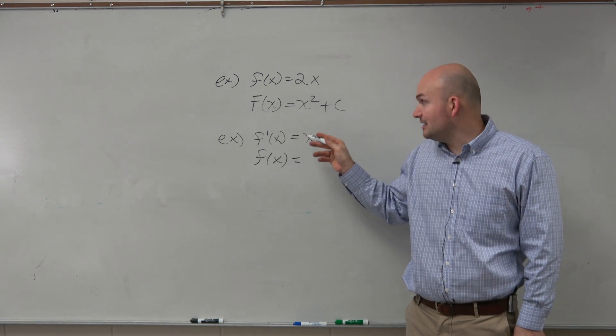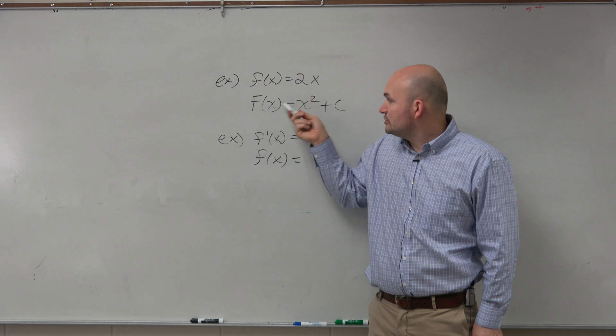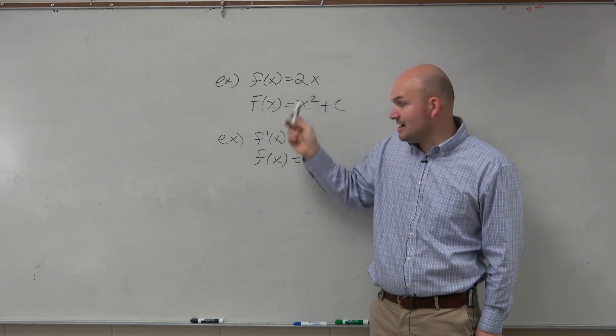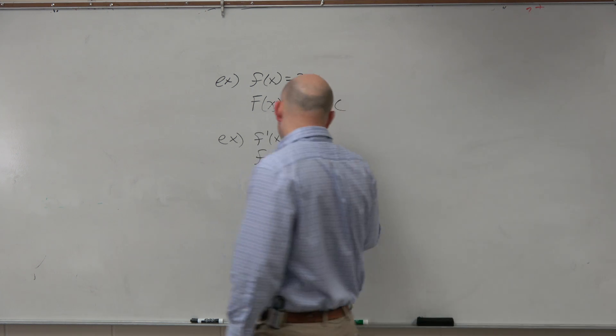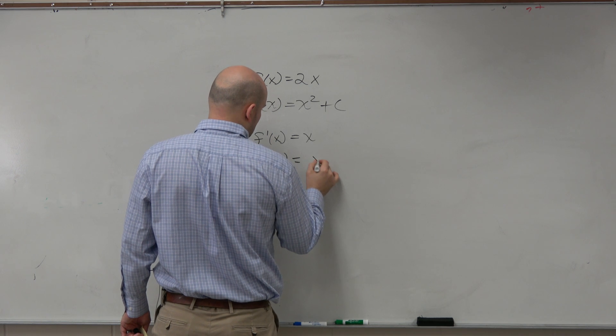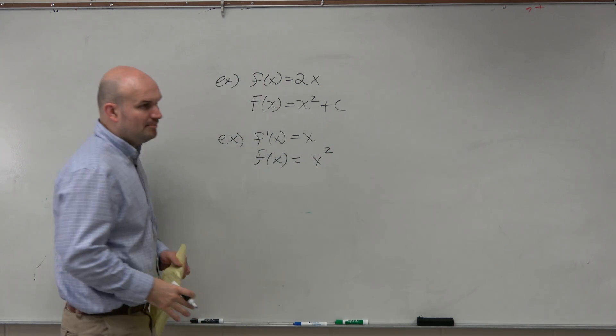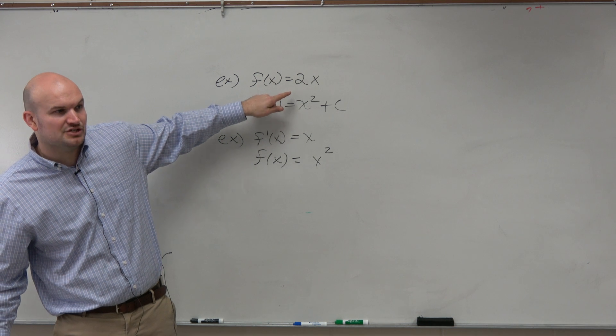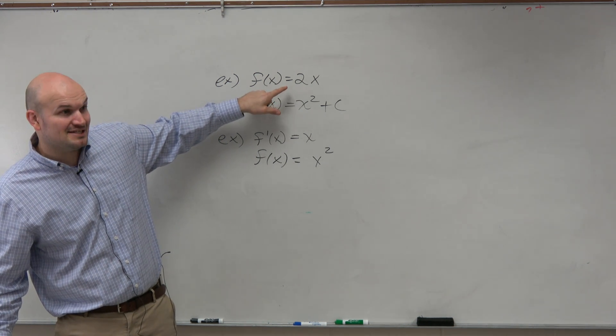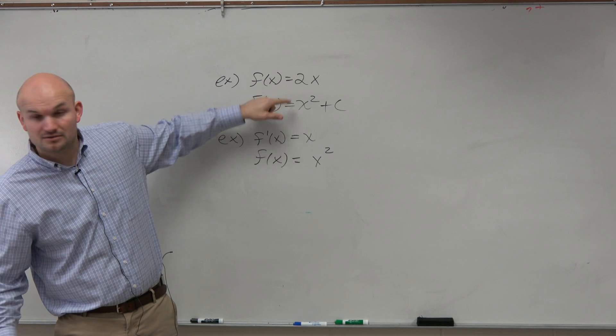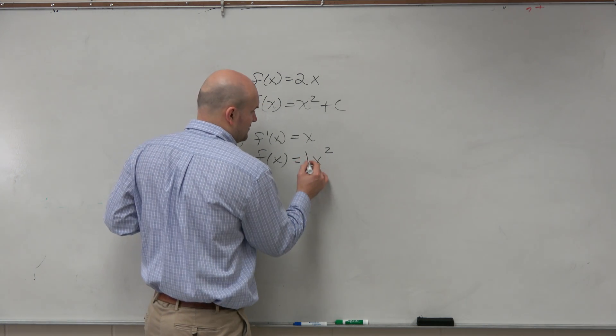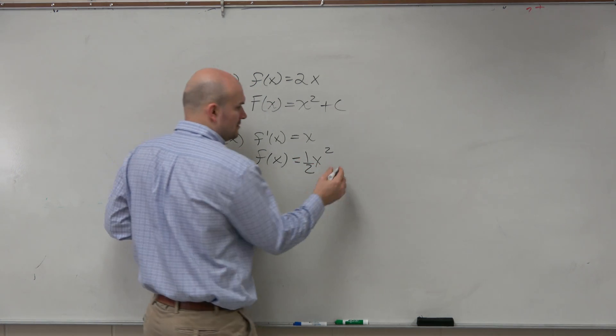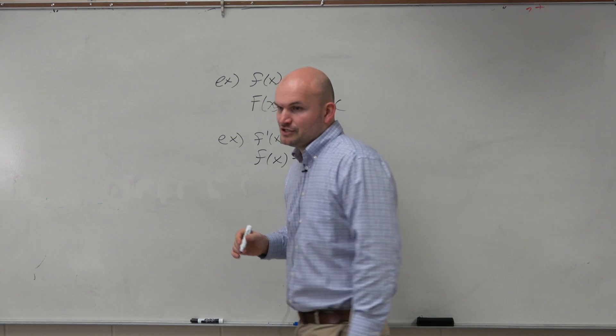Then I got to figure out, well, what is just going to give me x? Well, I know that the derivative of x squared gives me 2x. So I know that I want that x squared there. But I don't want the 2. So I got to have some kind of operation to eliminate that. So I should do what? Divide by 2, or have like 1 half.